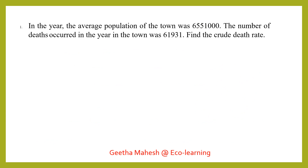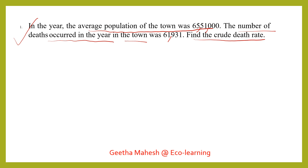Dear students, let us look at a problem. The average population of a town was 65,51,000 and the number of deaths occurring in the year in the town was 61,931. We have to calculate the crude death rate using the formula: deaths divided by population, multiplied by 1,000.